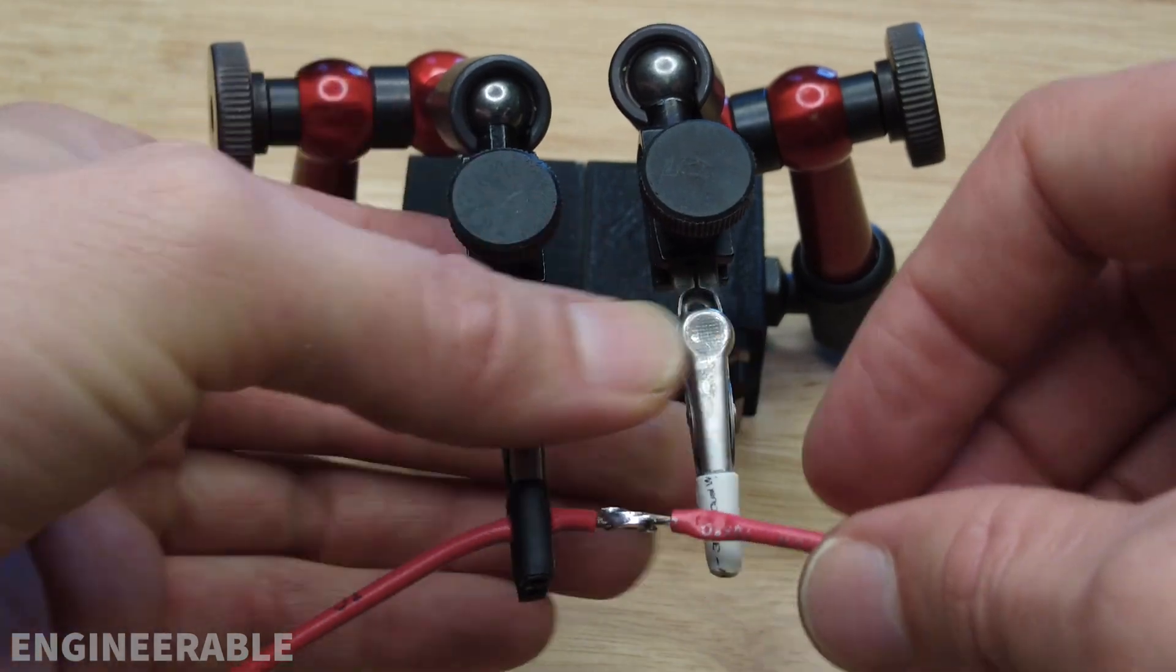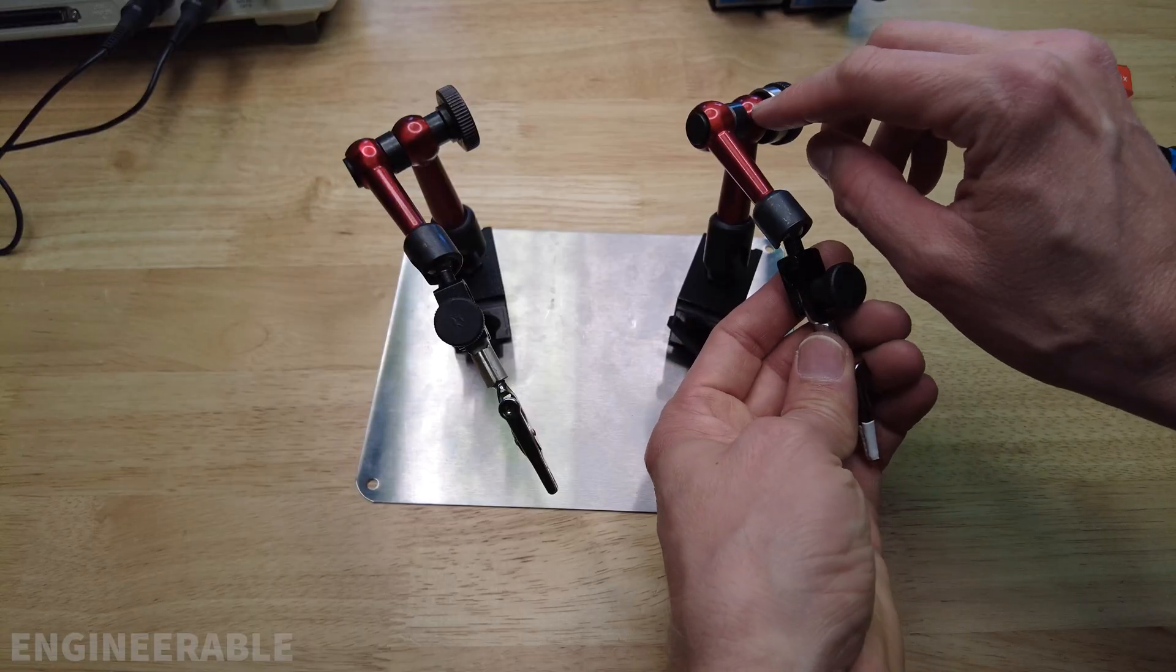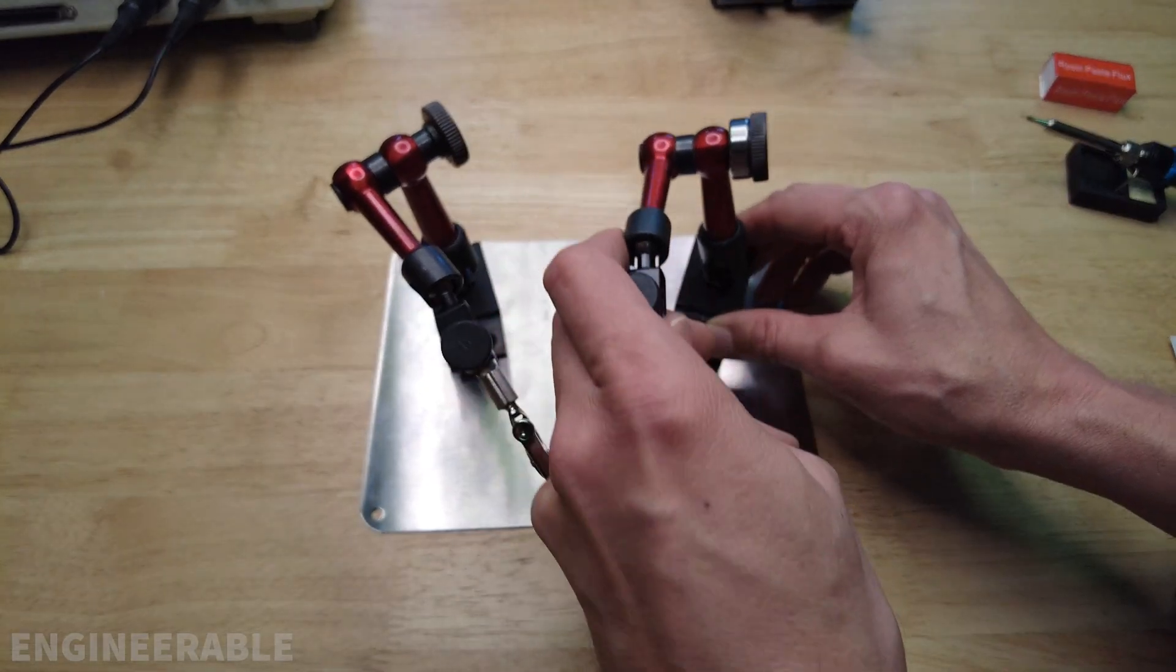After doing the skate bearing mod, I found an even easier way to add a thrust bearing to these dial indicator arms.